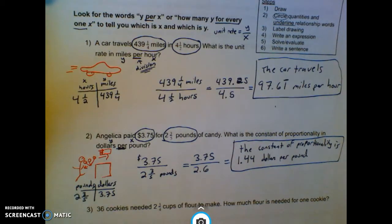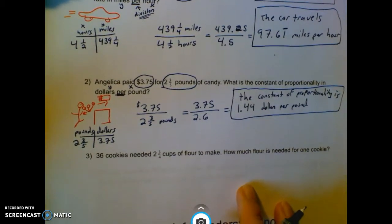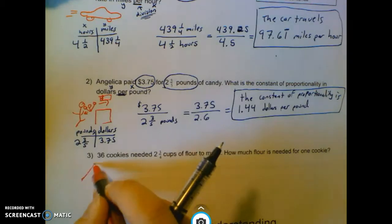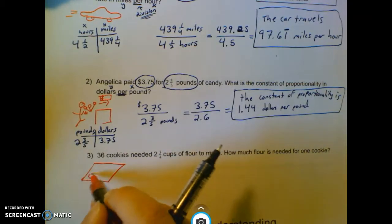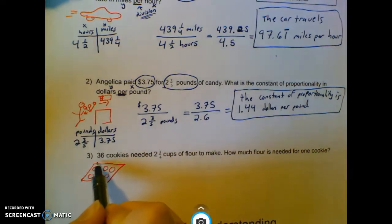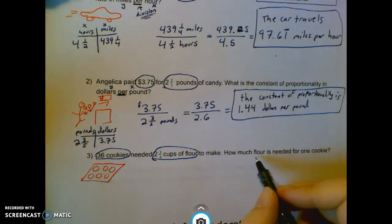That same structure with just a little bit of variation we sometimes see with this wording. So here we've got 36 cookies needed 2 and 3 quarters cups of flour to make. So with my drawing, I've got a cookie sheet. And then if I see my quantities, I've got 36 cookies, 2 and 3 quarters cups of flour. How much flour is needed for one cookie?